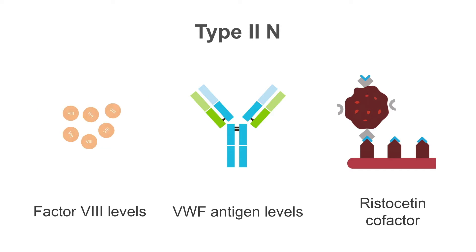In type 2N, factor 8 levels are low. This is because in type 2N, von Willebrand's factor and factor 8 cannot bind properly, so factor 8 is thus destroyed.